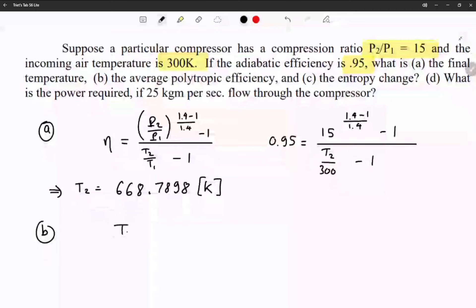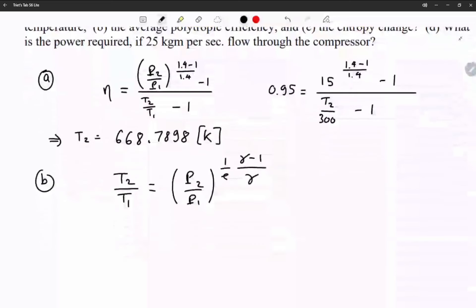This one you have T2, T final over T initial, equal to P2 over P1, then 1 over e, gamma minus 1 over gamma. T2 is 668.7898 divided by T1 which is 300...